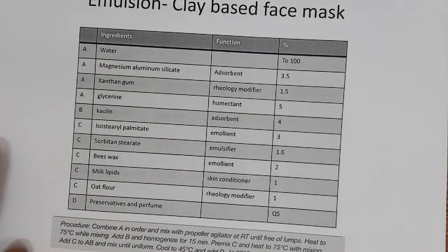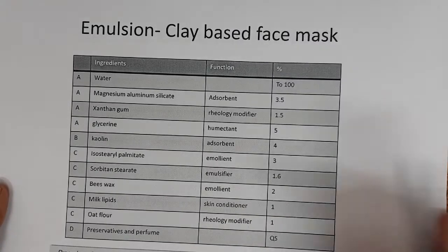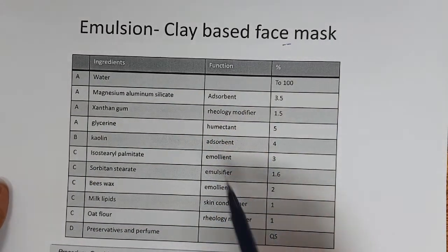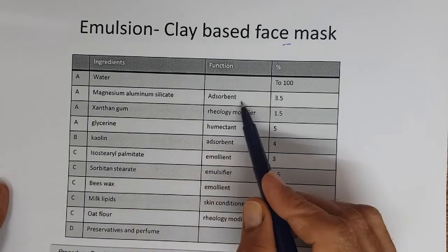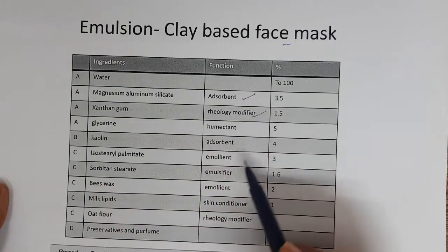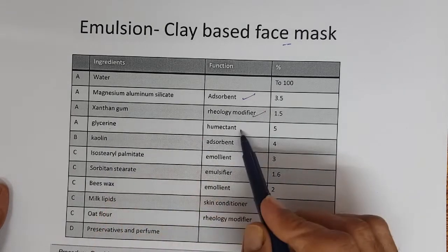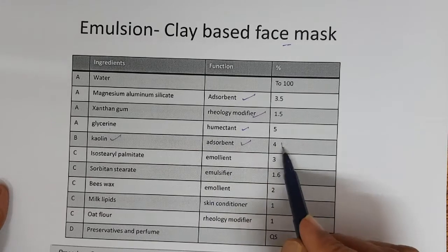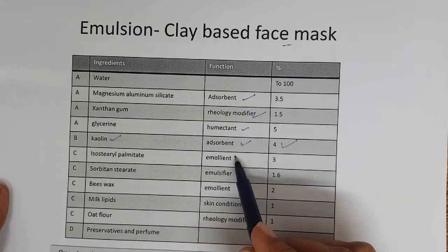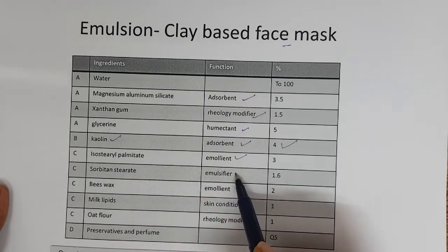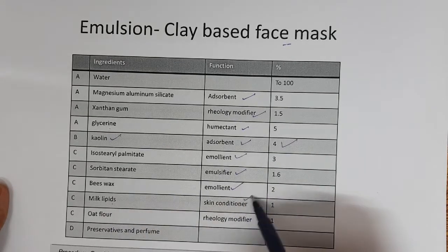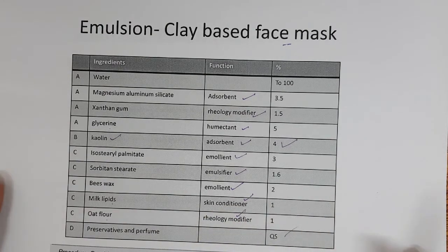Emulsion-based clay face mask: it contains water, magnesium aluminium silicate as an adsorbent, xanthan gum as a rheology modifier, glycerin as a humectant, kaolin as an adsorbent at 4% level, isostearyl palmitate as an emollient, sorbitan stearate as an emulsifier, beeswax as an emollient, milk lipids as a skin conditioner, oat flour as a rheology modifier, and preservatives and perfume.